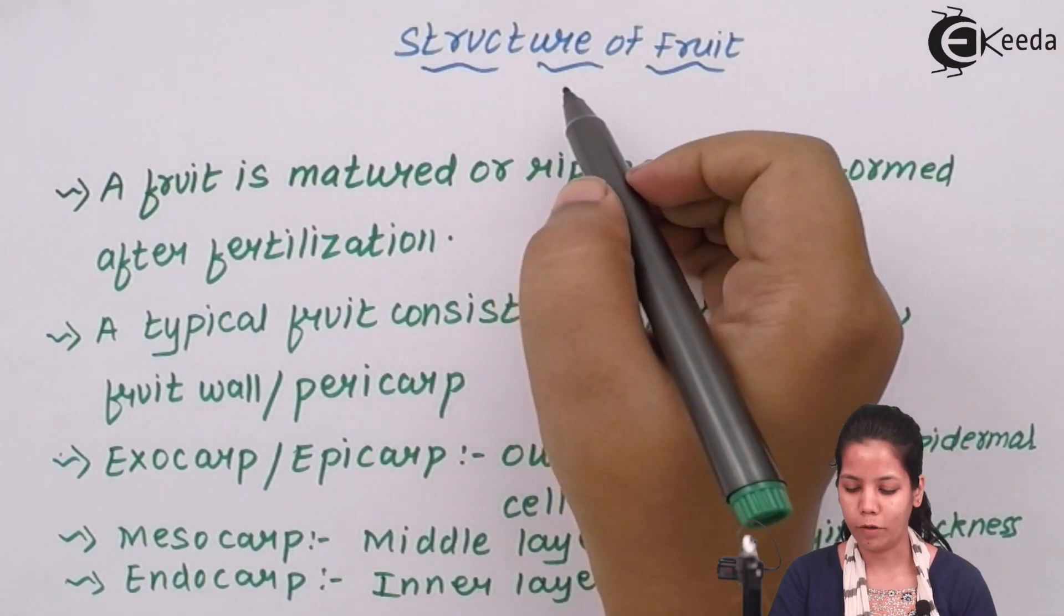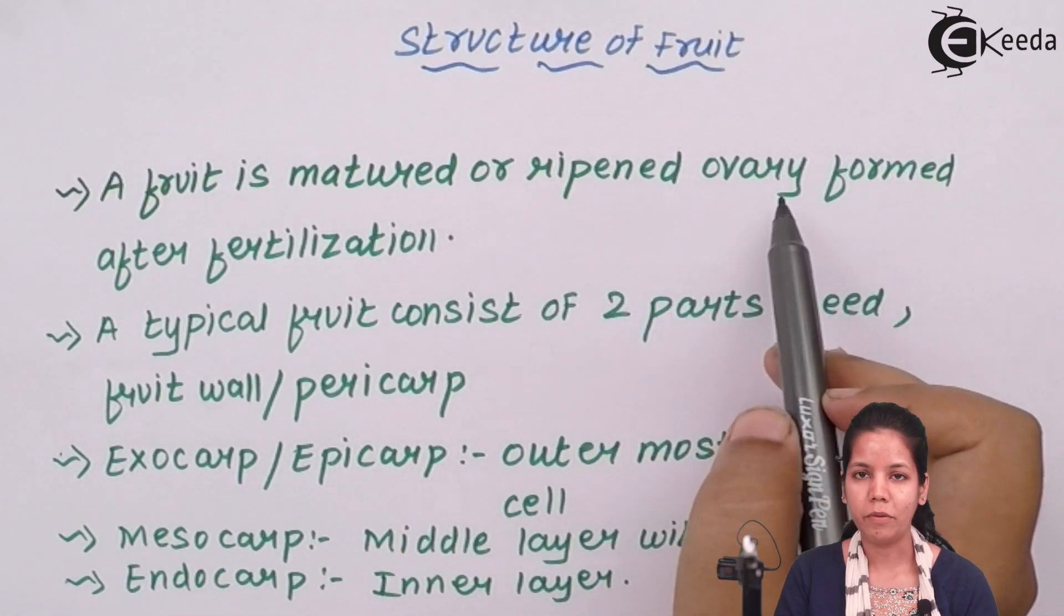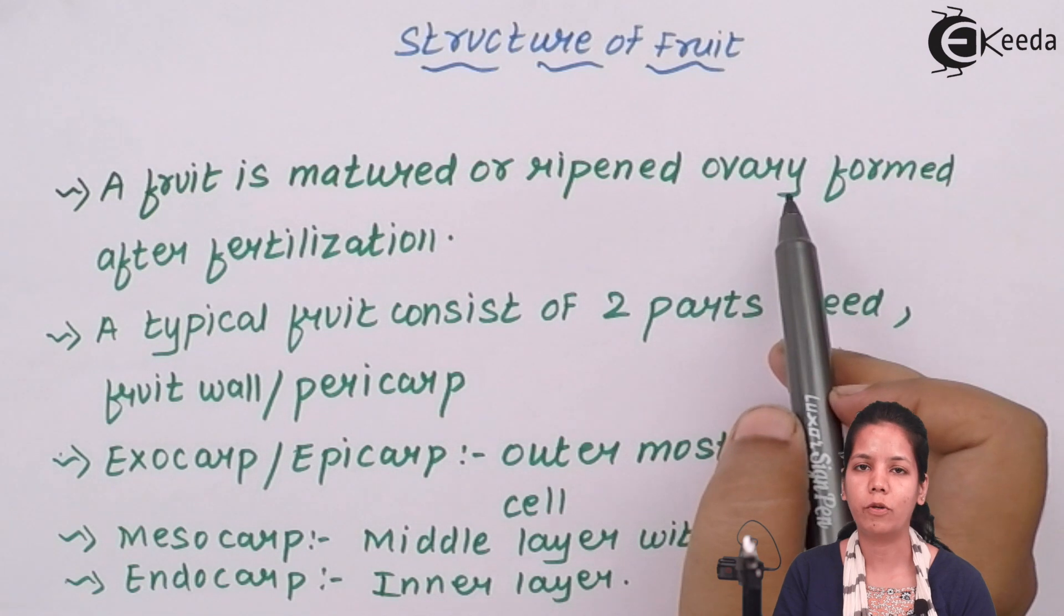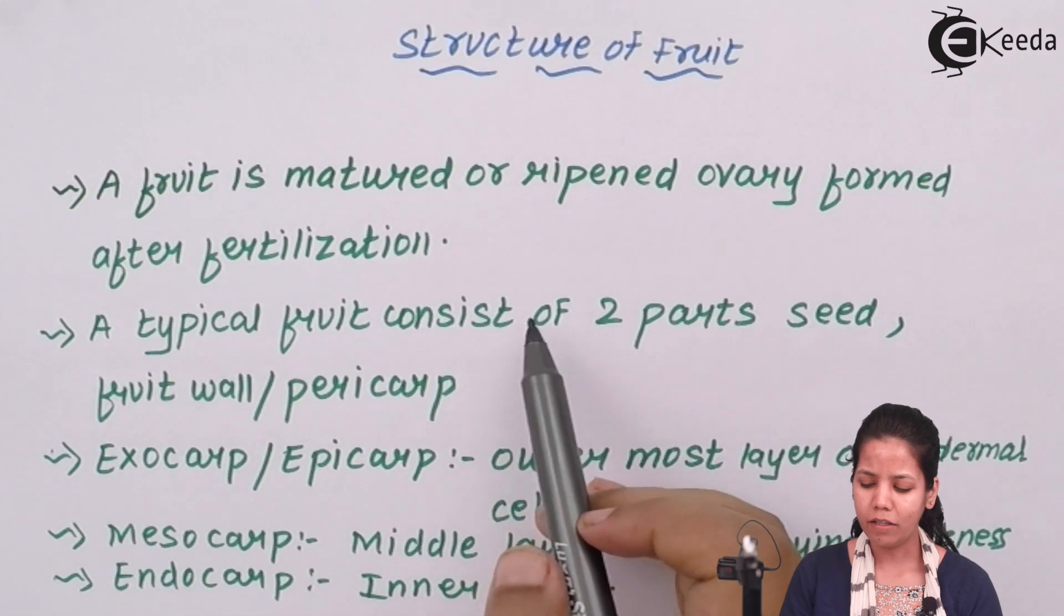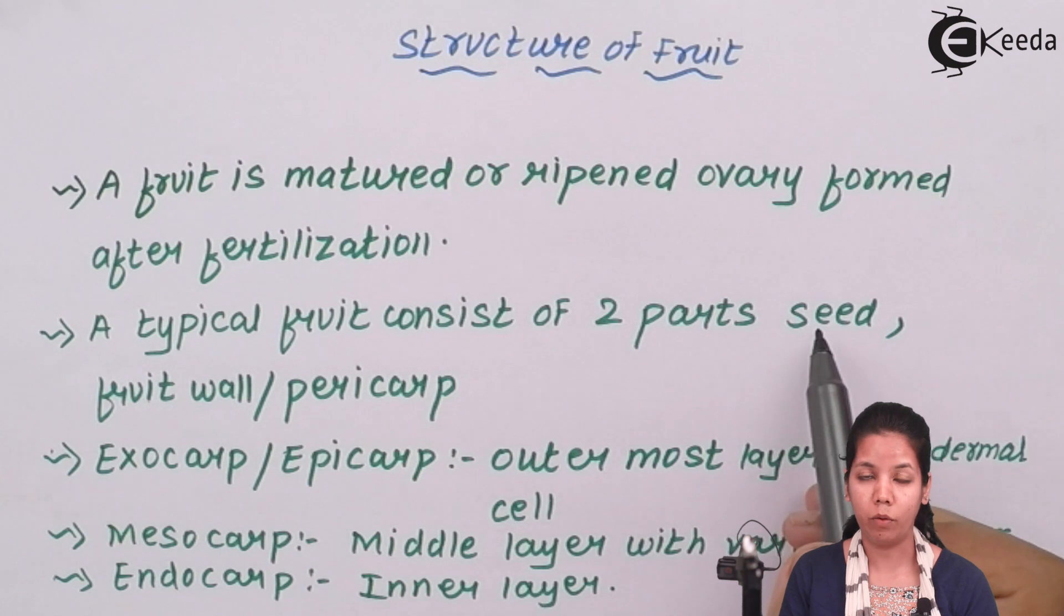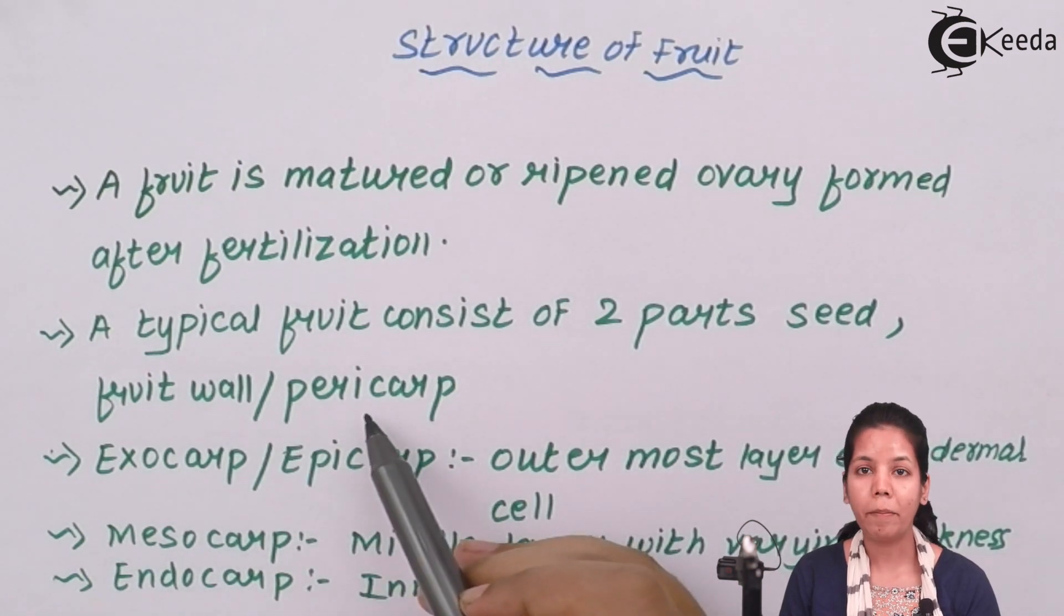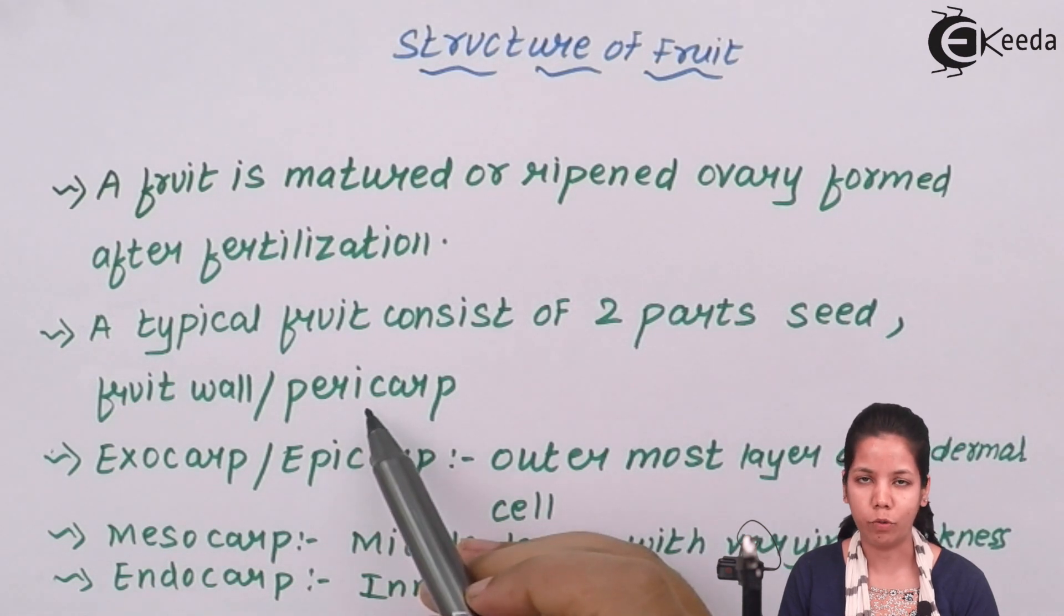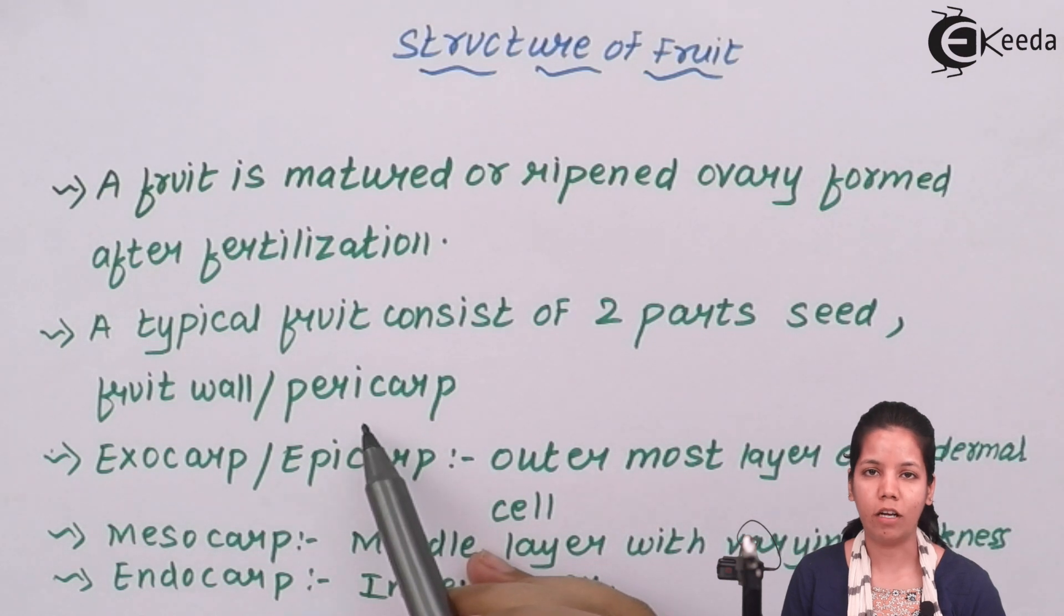A fruit is a mature or ripened ovary formed after fertilization when gametes fuse. A typical fruit has two important parts: the seed, from which a plant grows, and the fruit wall or pericarp. In mango, the pericarp is the greenish outer covering before maturation, and yellow after maturation.